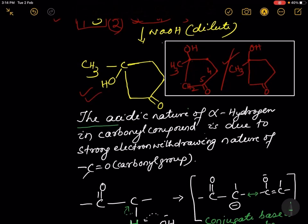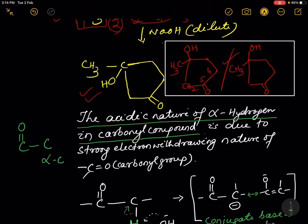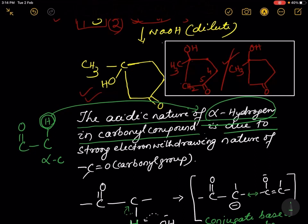The acidic nature of alpha hydrogen in carbonyl compounds — let us draw a carbonyl group next to a carbon. This is the alpha carbon, and this alpha carbon is connected to one hydrogen atom. The acidic nature of this alpha hydrogen in carbonyl compounds is due to the strong electron-withdrawing nature of the carbonyl group.